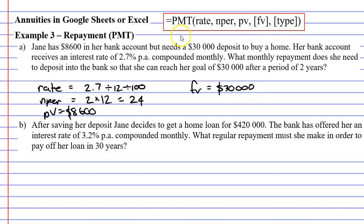What about the type? Remember that type 0 means repayments at the end of the month or the end of the time period, and type 1 are repayments at the beginning of the time period. When you read the question, there's nothing that says anything about repayments at the beginning or the end of the period. If that's the case, just assume that they're putting them at the end of the period. Type 0 is the default repayment method.